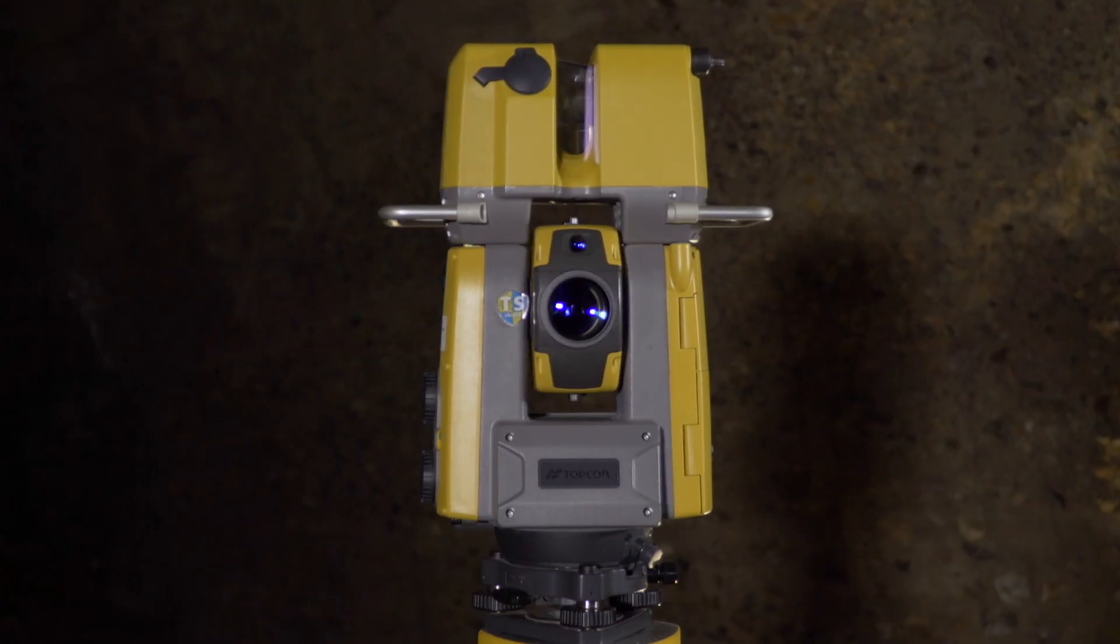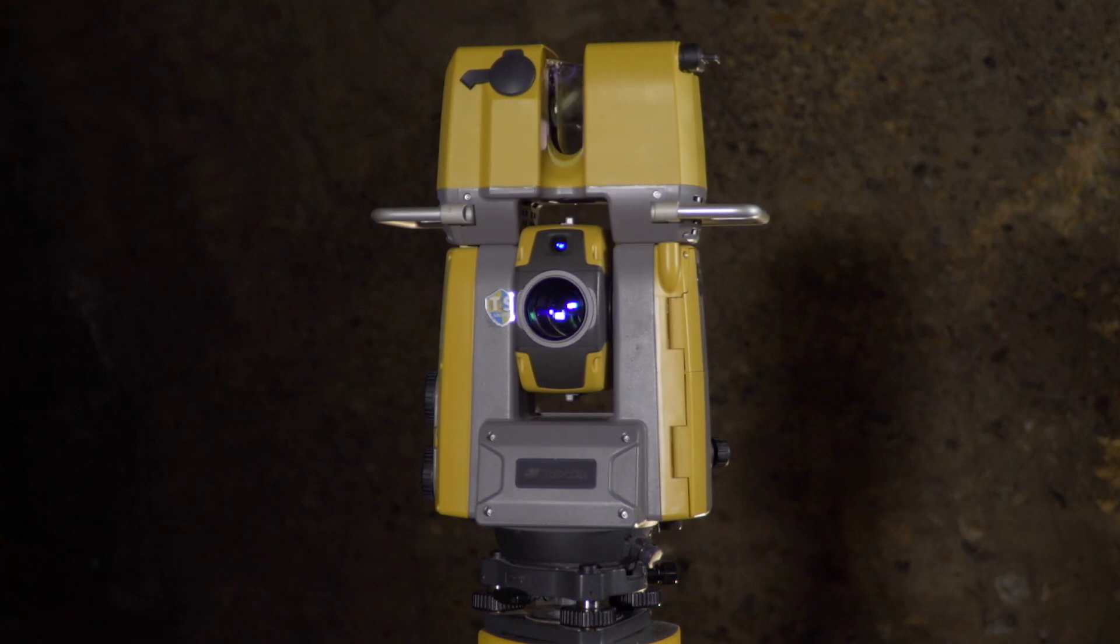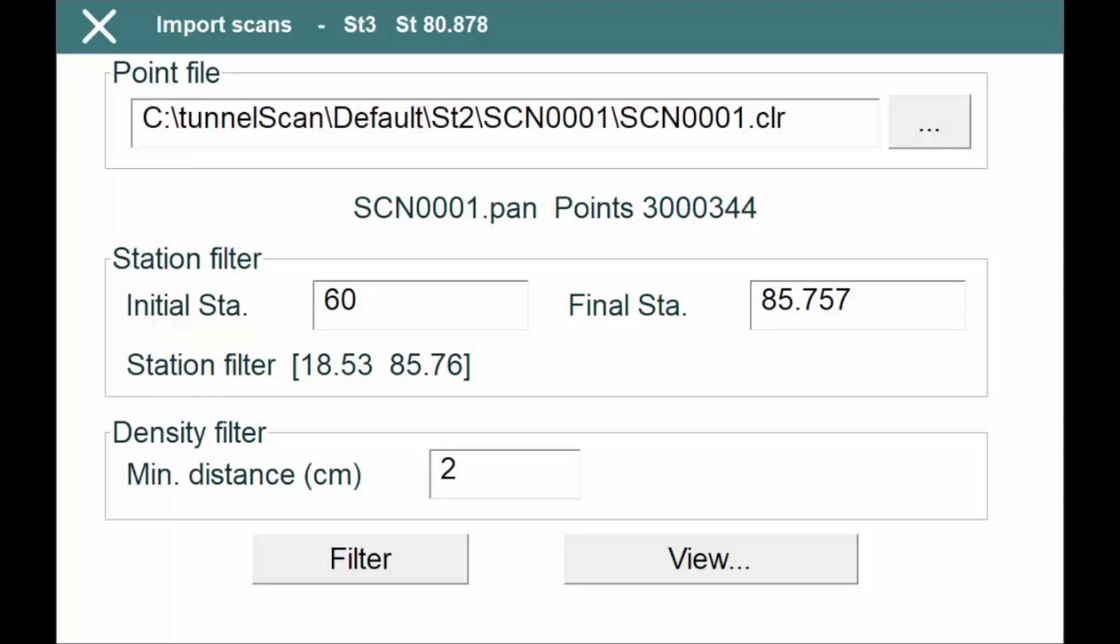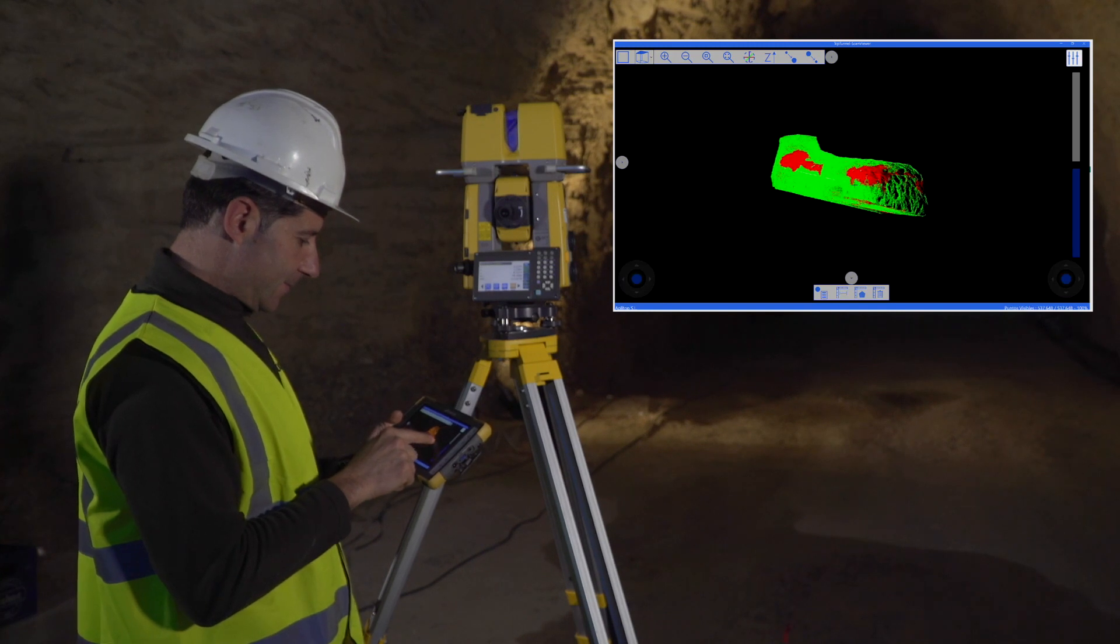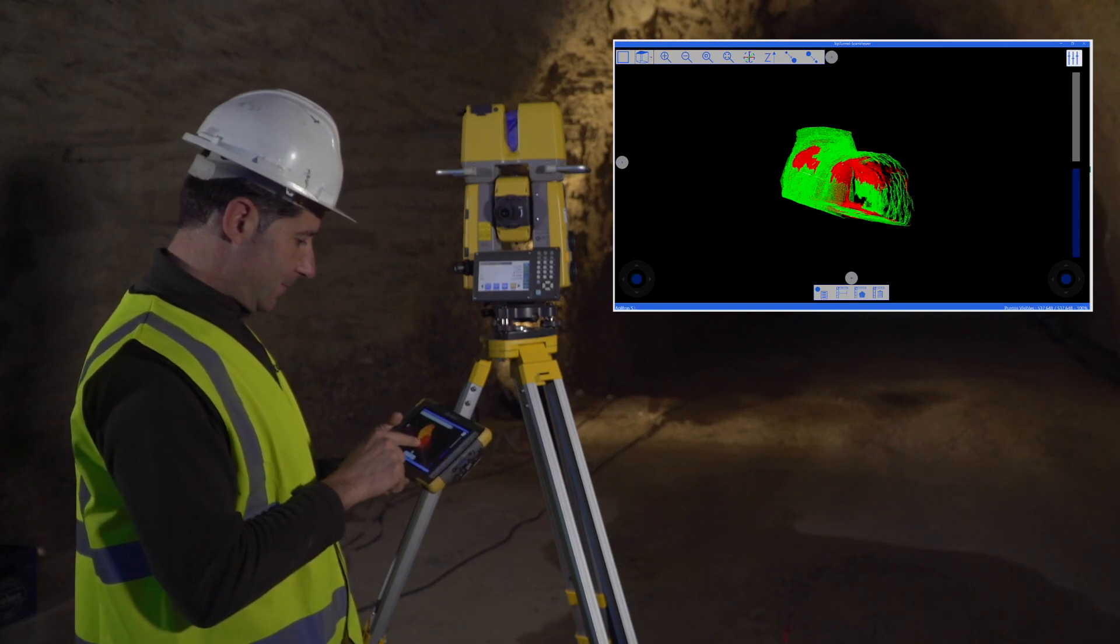TCP Tunnel Scan controls the scanning of the tunnel vault or face, with optional filters by station range and distance. A powerful 3D viewer allows you to review the point cloud and check measures.